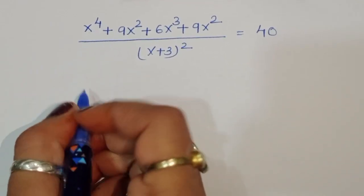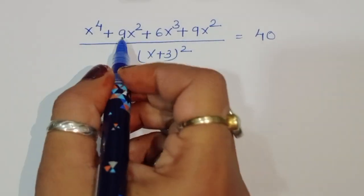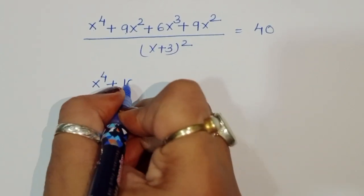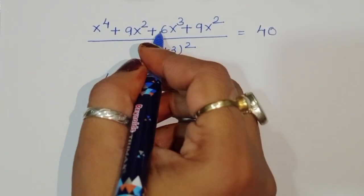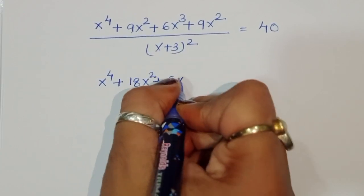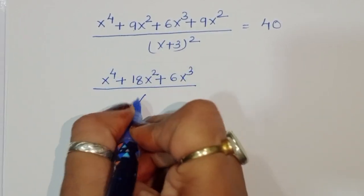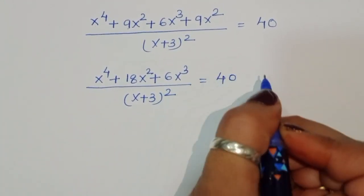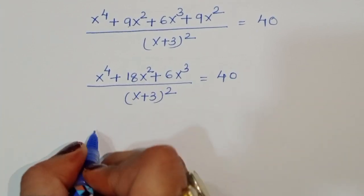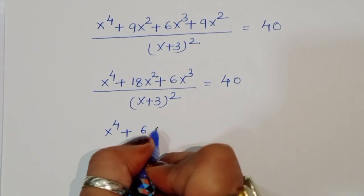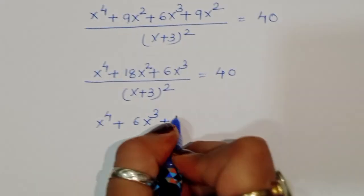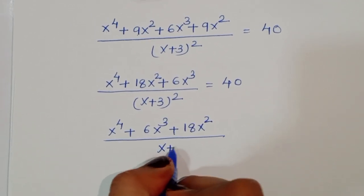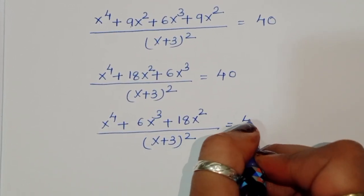Combining like terms: 9x² + 9x² = 18x². So we have x⁴ + 6x³ + 18x² divided by (x+3)² is equal to 40.